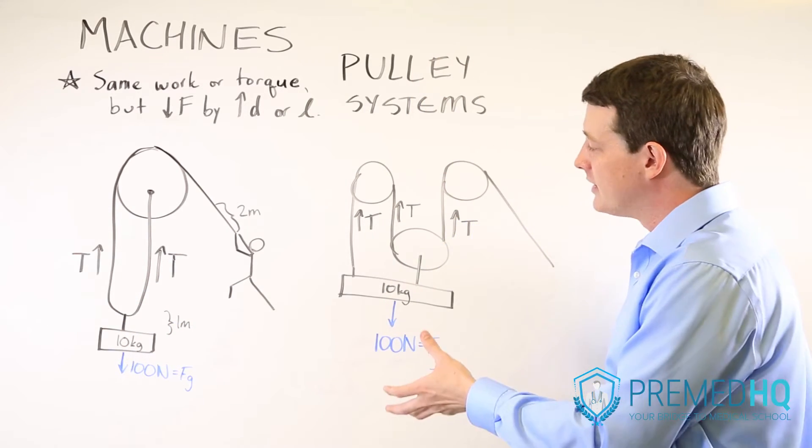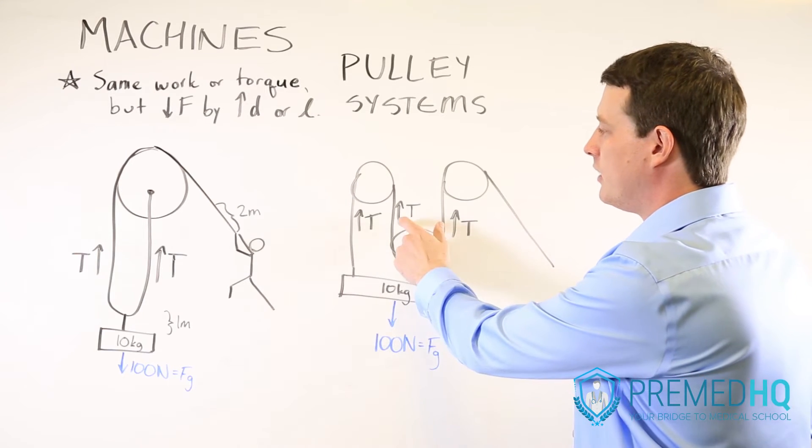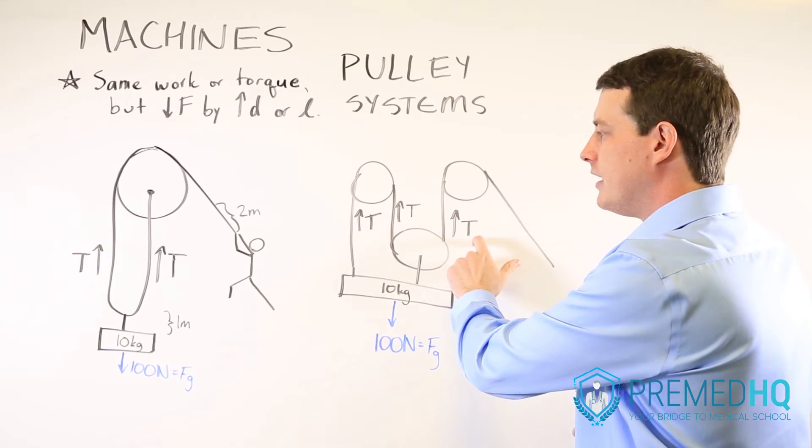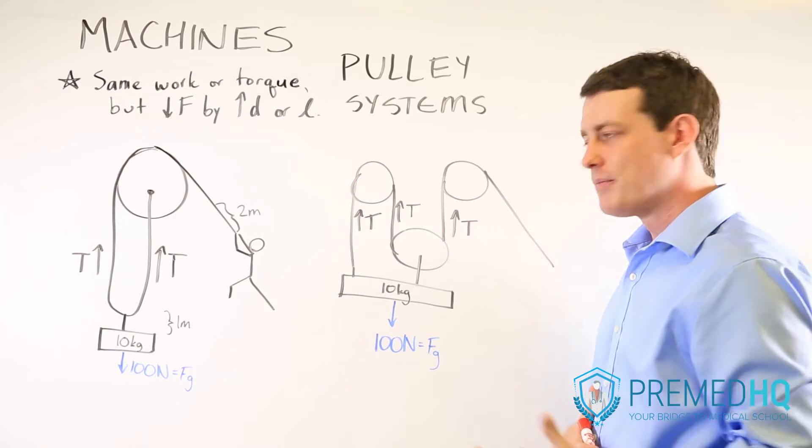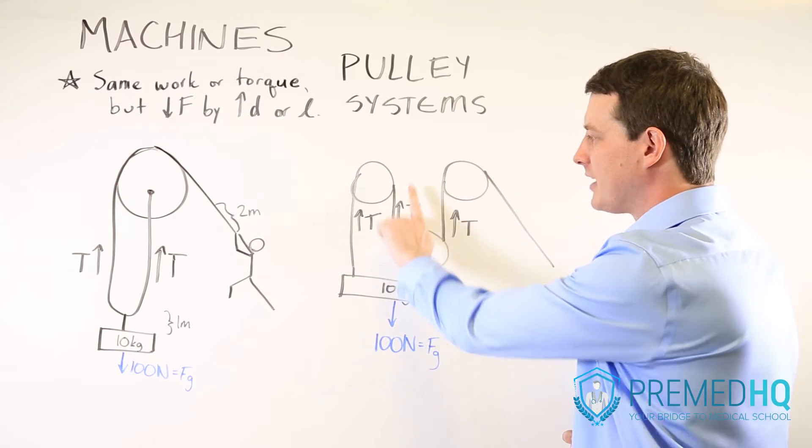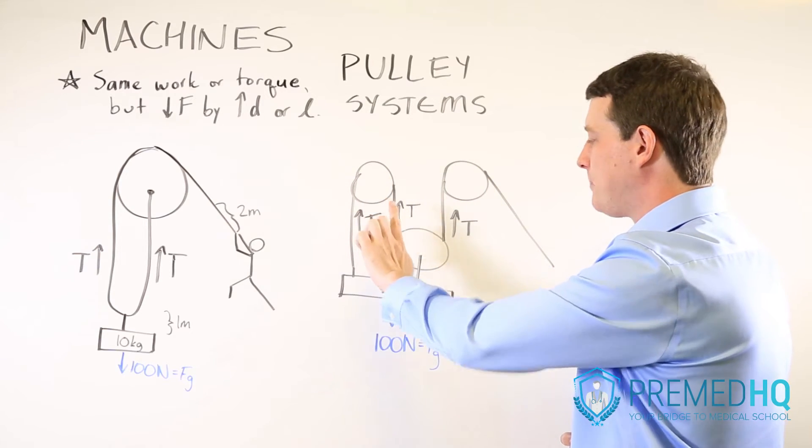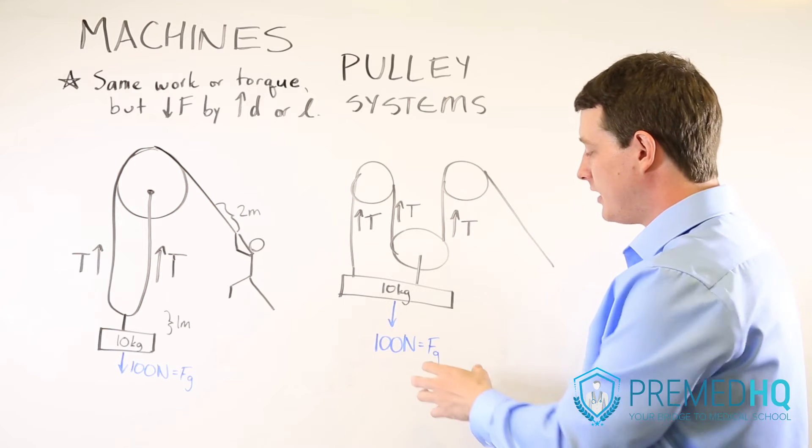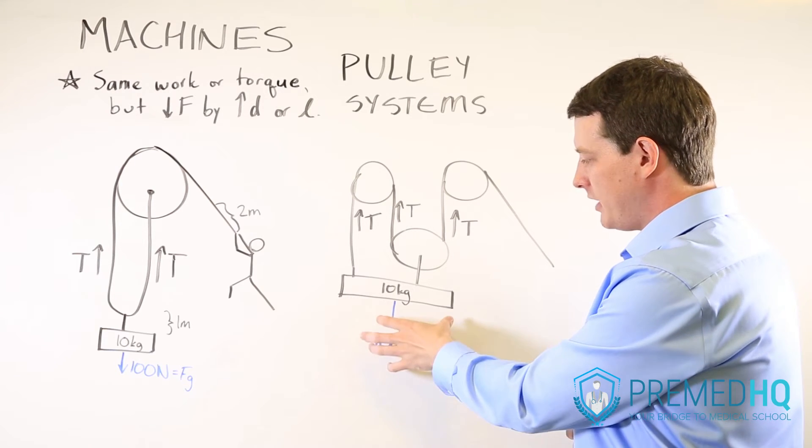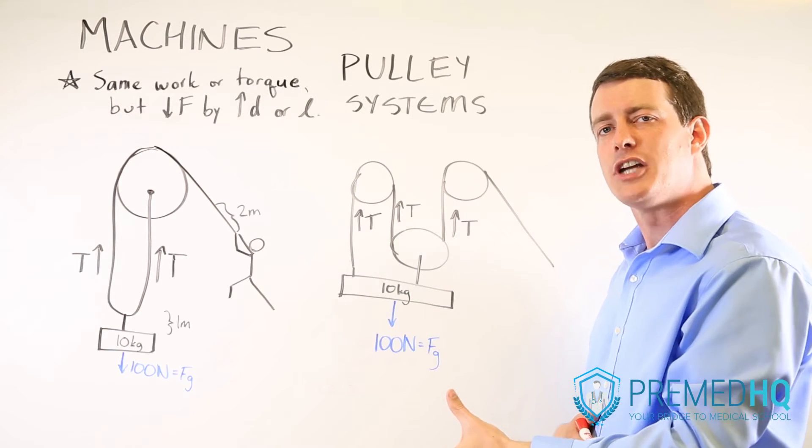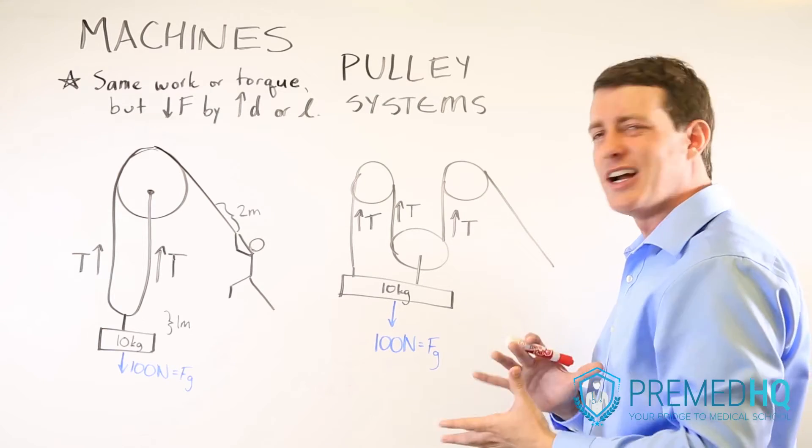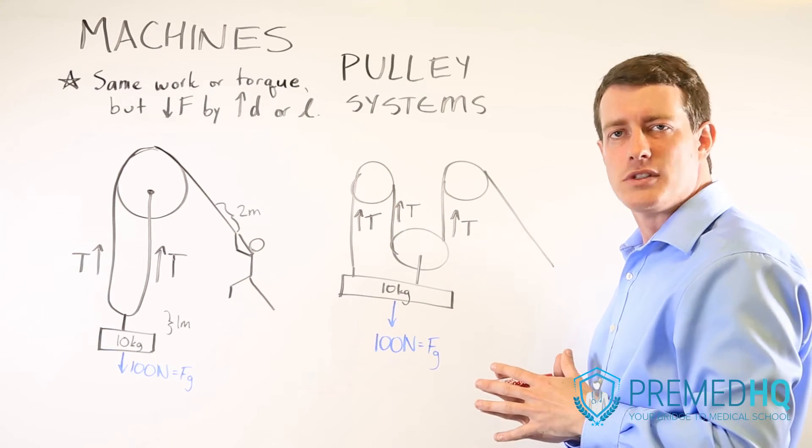Over here in this pulley system, you'll recognize that you essentially triple the effect of the tension force. So the tension's pulling up here, here, and there. And so as a result, you are going to be lifting this 100 Newton object but using only around 33 Newtons of force.